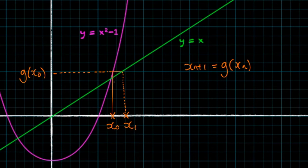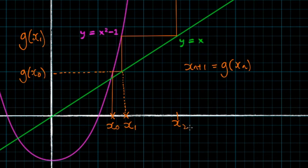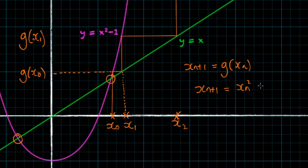Now that x₁ is our new input, we draw a vertical line from x₁ to the curve, giving us g(x₁). We then draw a horizontal line from the curve to the green line, and the process repeats. As you can see in this case, the values of x — x₂ and so on — are getting further and further away from the roots. The intersection points represent the roots, so our iteration x_{n+1} = x_n² - 1 actually diverges. It doesn't converge to the root, and therefore our iteration fails.